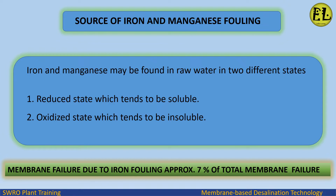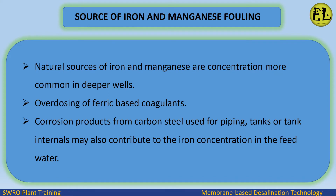Membrane failure due to iron fouling accounts for approximately 7% of total membrane failures. Natural sources of iron and manganese are more common in deeper wells. Overdosing of ferric-based coagulants, as well as corrosion products from carbon steel used for piping, tanks, or tank internals, may also contribute to the iron concentration in the feed water.